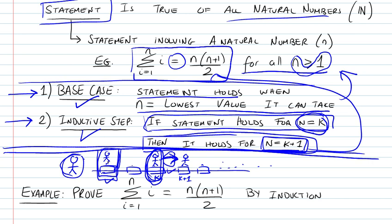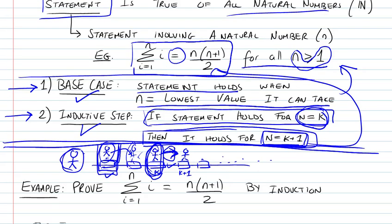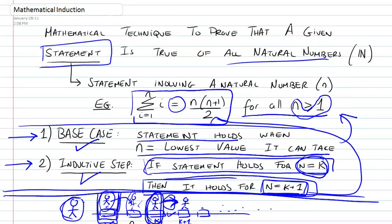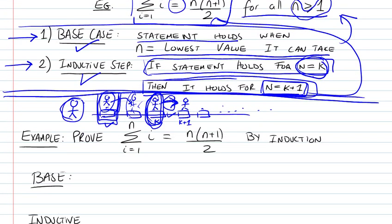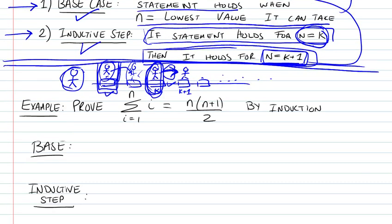We've proved that this person could move along all the rocks without falling into the water — standing on one, jumping to the next, standing on that one, jumping to the next — because we've proved both that standing on a rock is possible and that the jump is possible. This is proof by induction. In the next video, we're going to be looking at an example of proof by induction.